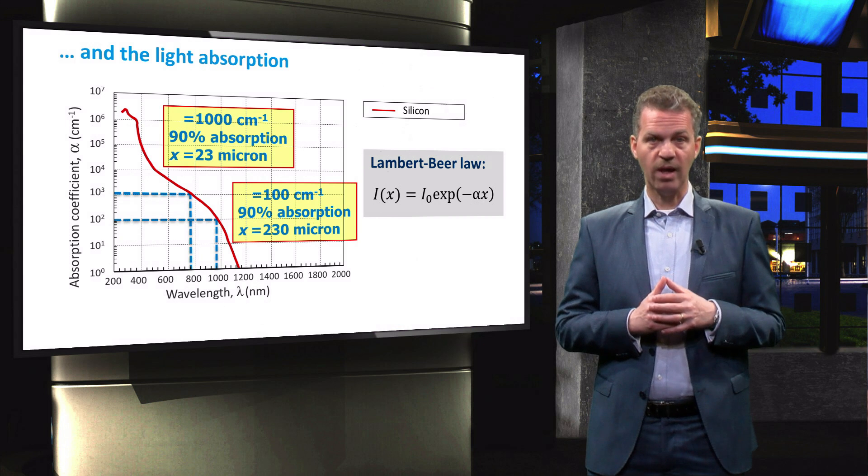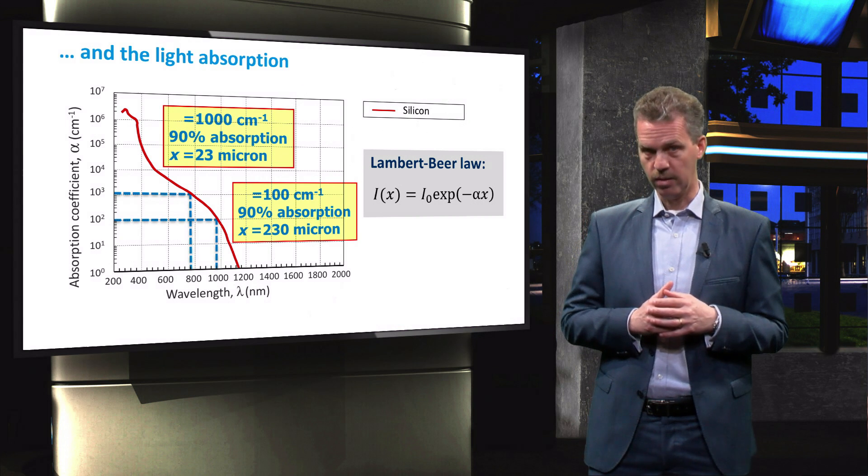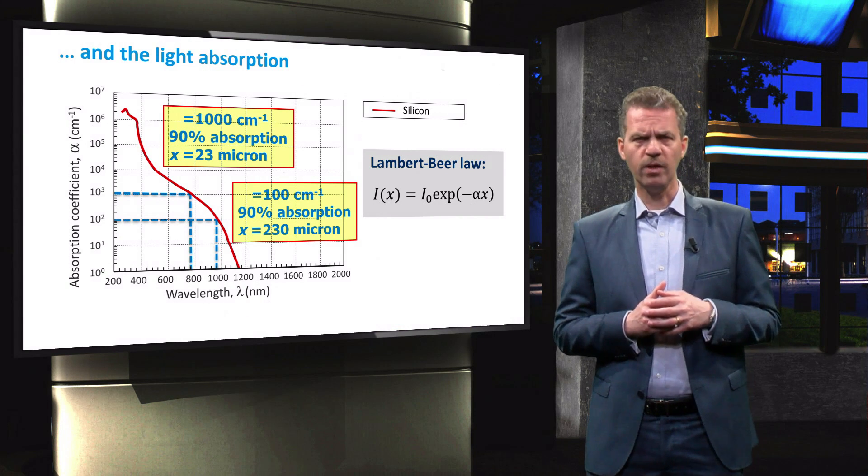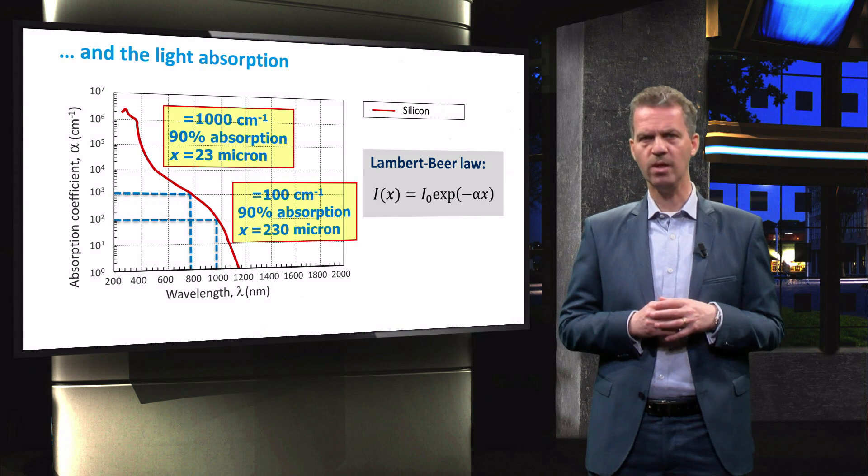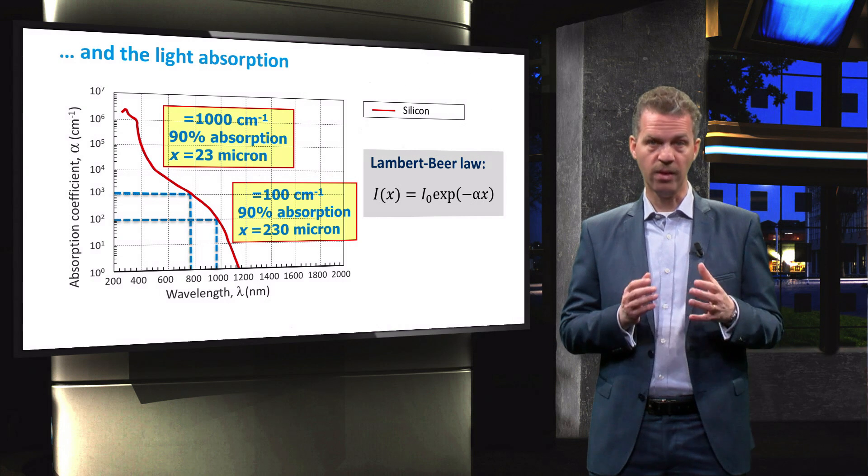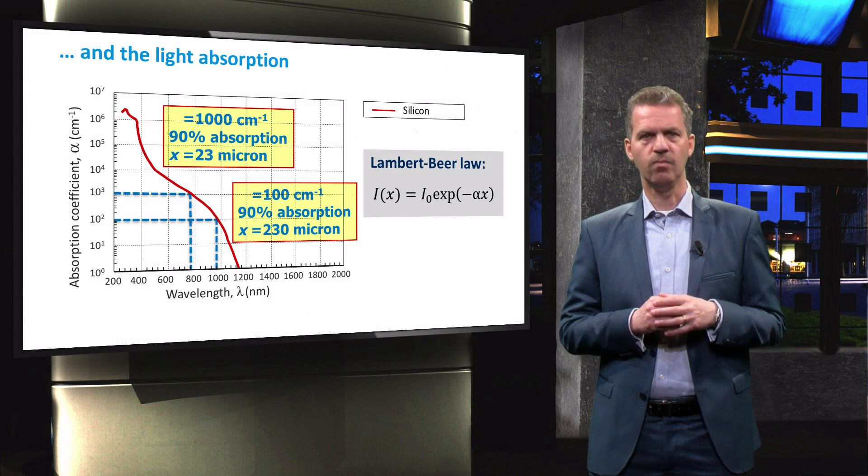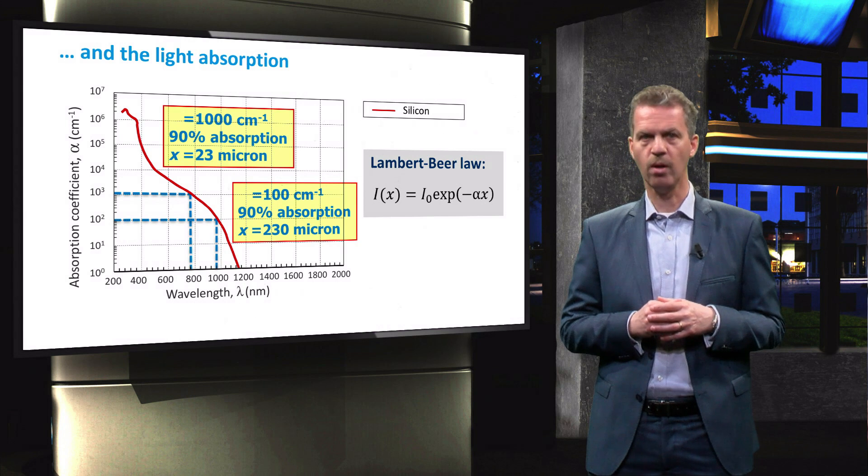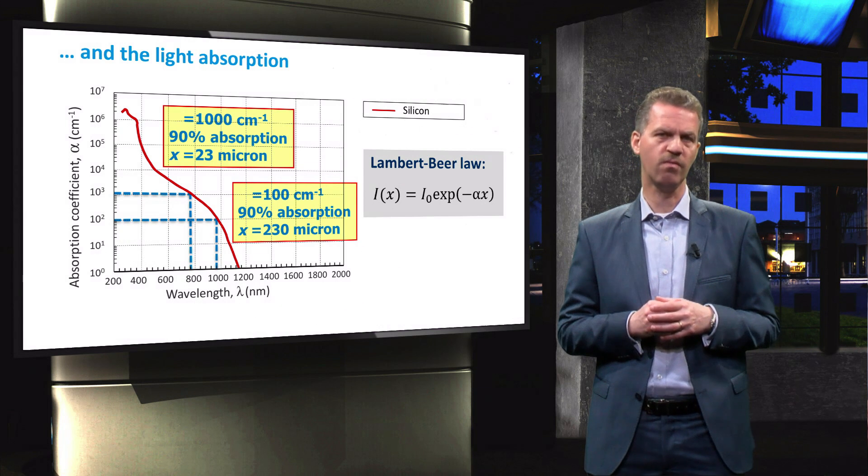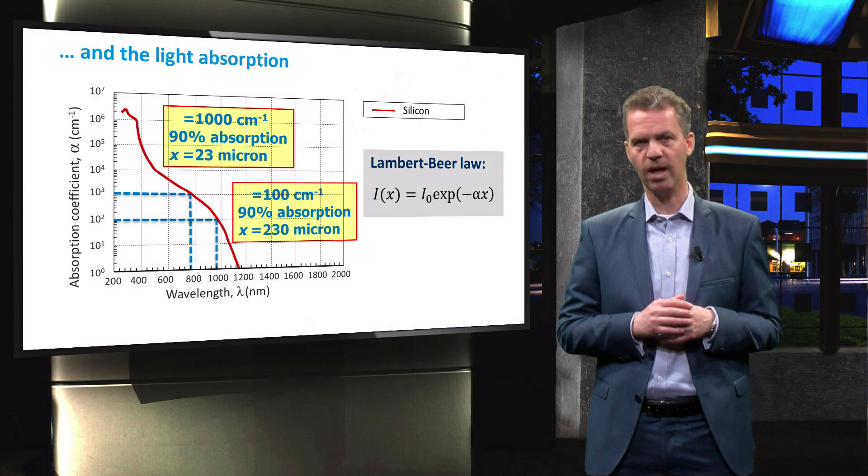If we look at a wavelength of just below 1000 nm, the absorption coefficient is an order of magnitude lower, at about 100 inverse centimeters, and in this case we need a thickness of 230 micrometers to absorb 90% of the incident photons, up to a wavelength of 1000 nm.